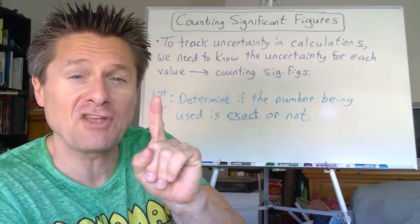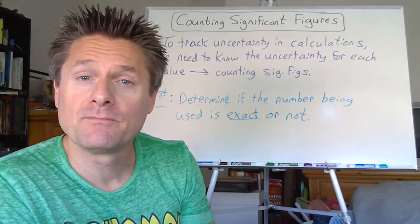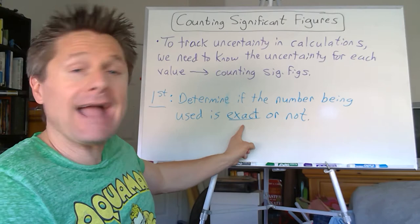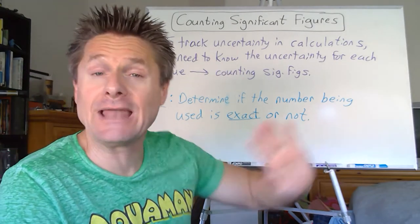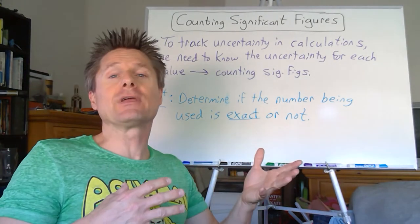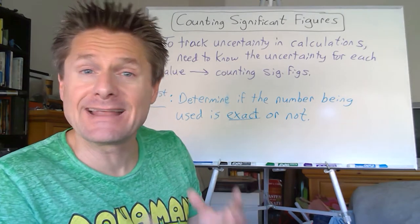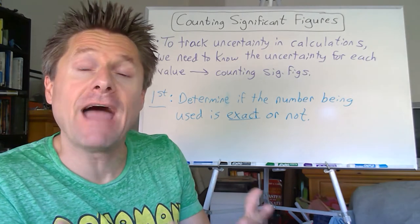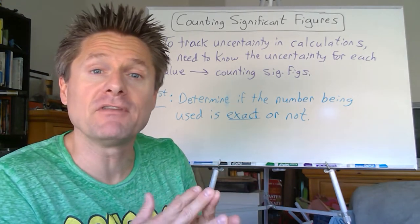So the first thing you want to ask yourself, you're on a quiz, here's a number. Is that number exact or is it not exact? So we'll take some time to look at exact numbers. In essence, an exact number has no uncertainty to it. It's a defined value. So we'll talk about different types of defined values.